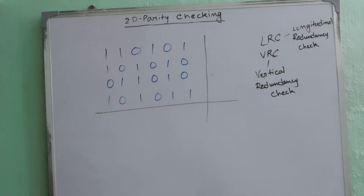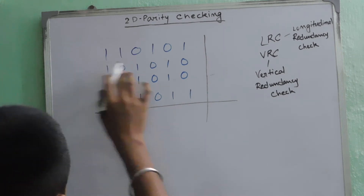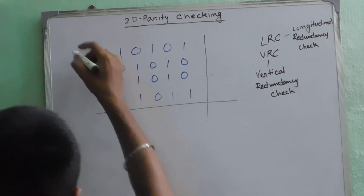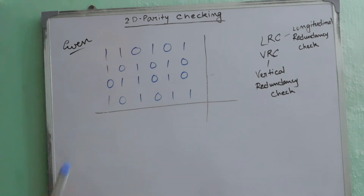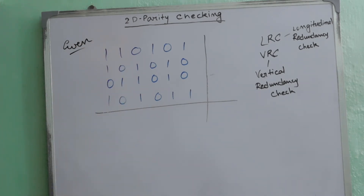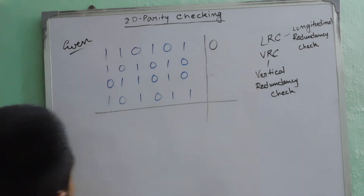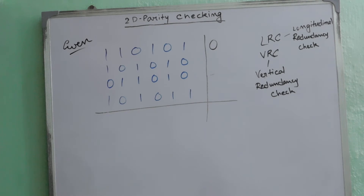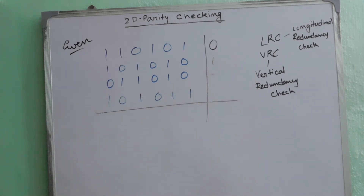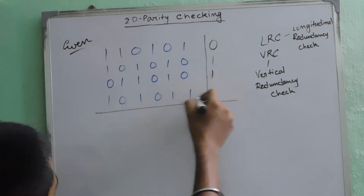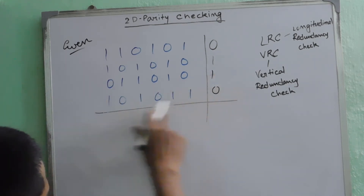Let us calculate the LRC. For the first row, since there are four ones and we are using even parity, the first LRC will be 0. The second LRC will be 1 because there are three ones. The third LRC will also be 1 because there are three ones. And the last LRC will be 0 because there are four ones.